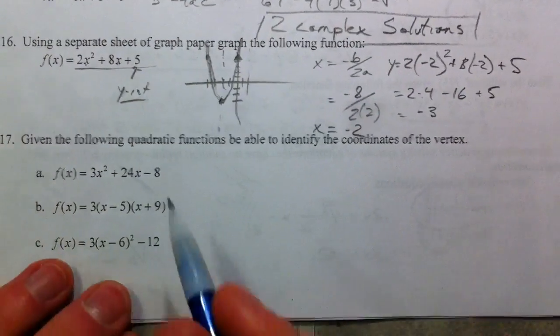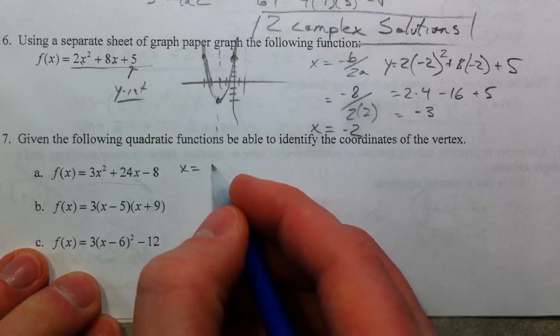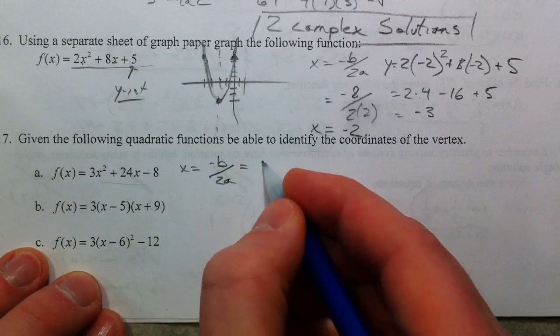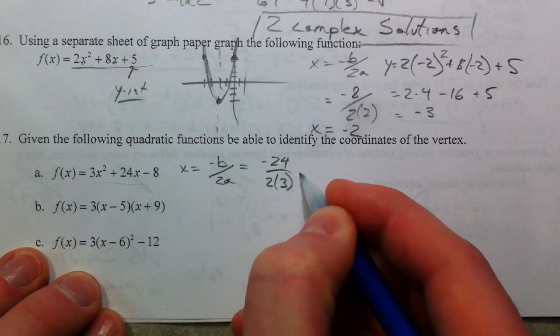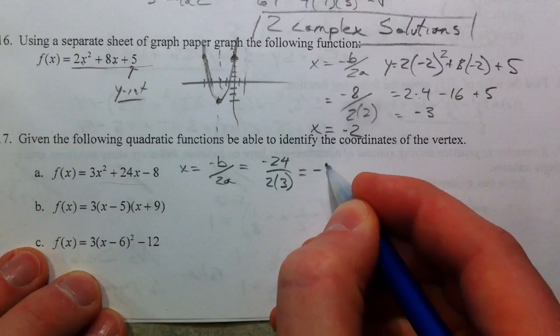We're going to find it three different ways. First way we're going to use, with standard form, the negative b over 2a again. And so negative 24 over 2 times 3, or 6, negative 24 over 6, is negative 4.